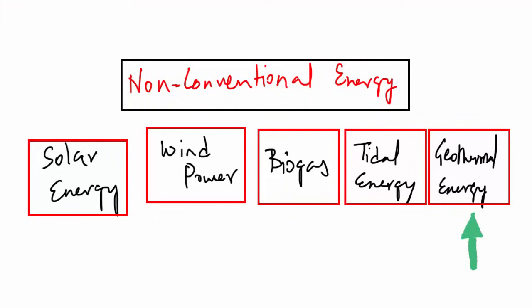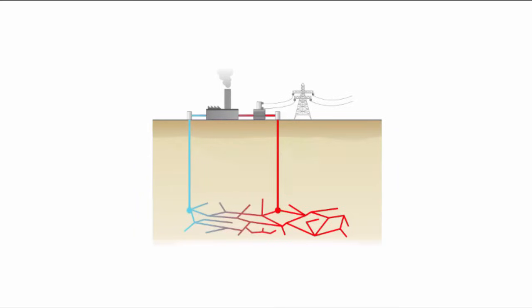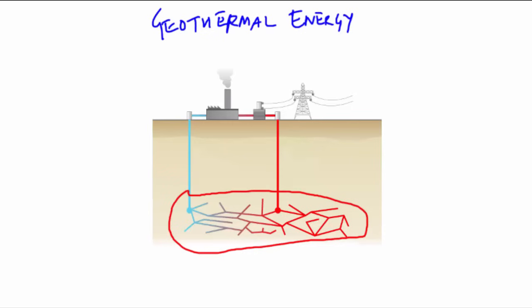Last but not the least, geothermal energy is another form of non-conventional energy source. When we break the word geothermal, we get geo that is referred to as earth and thermal which means heat. In this, heat and electricity is produced by using the heat from the interior of the earth.